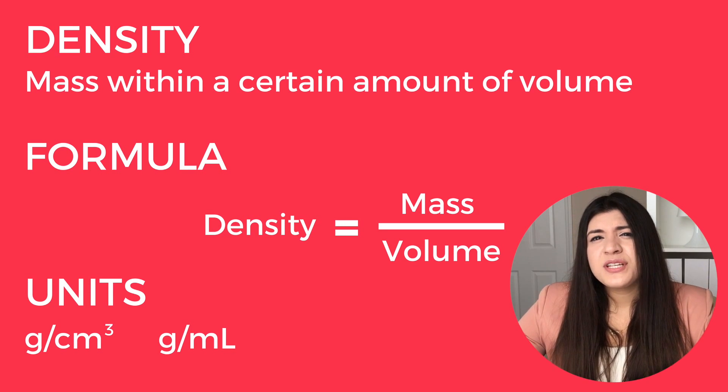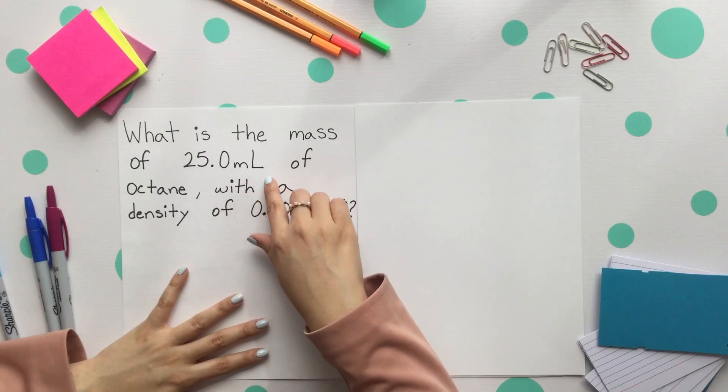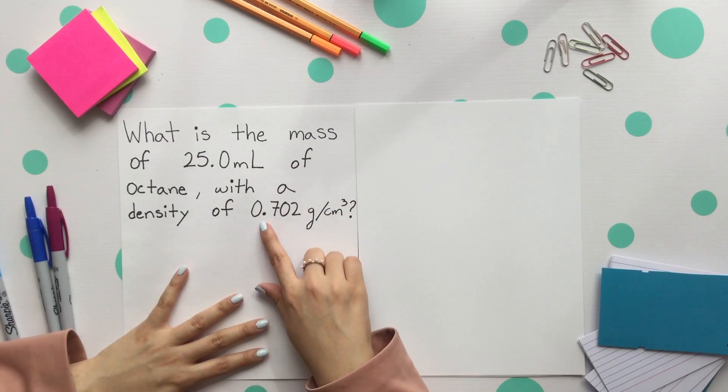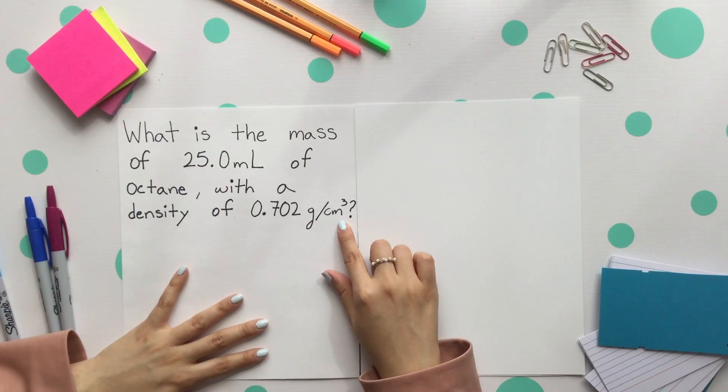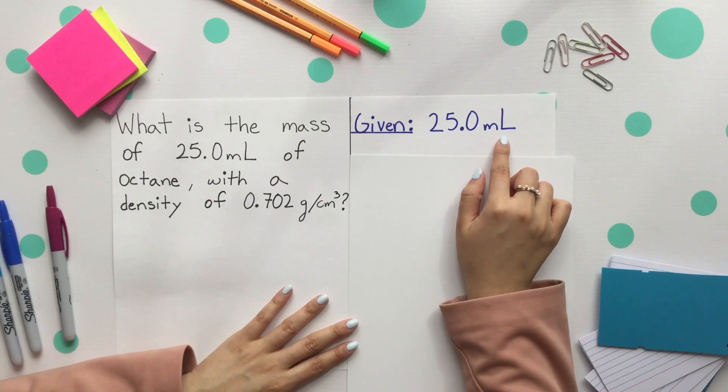Let's jump into our first example that uses density as a conversion factor. What is the mass of 25.0 milliliters of octane with a density of 0.702 grams per cubic centimeter? As always, start with identifying your given conversion factor or factors and what you are finding. The given is 25.0 milliliters.